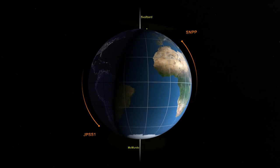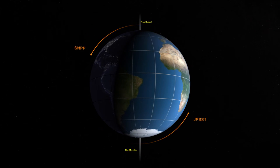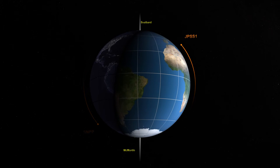SNPP only contacts Svalbard, whereas JPSS-1 contacts both polar ground stations.